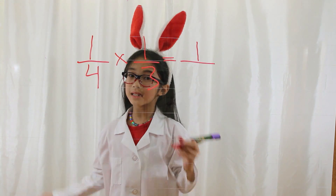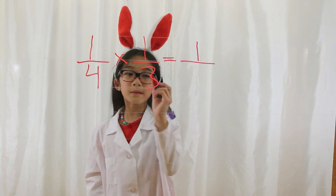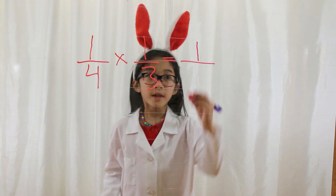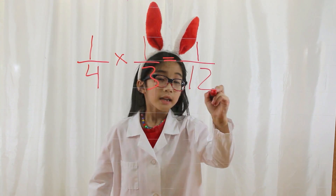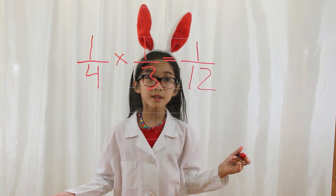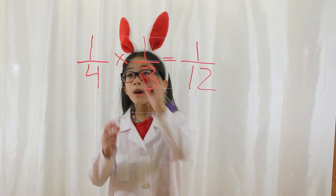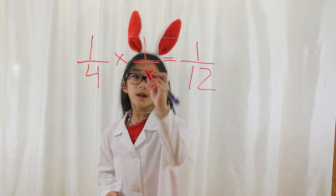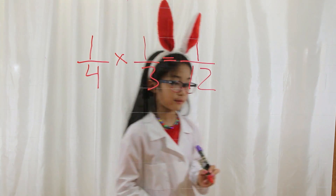And then you multiply the denominators together. Four times three is twelve, so twelve is our denominator. Can you simplify this fraction? No. One fourth times one third equals one twelfth.